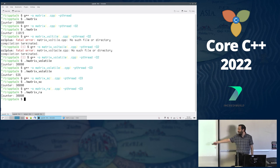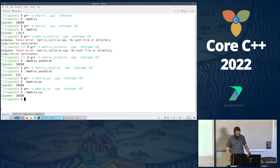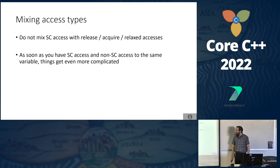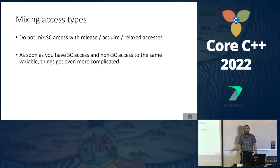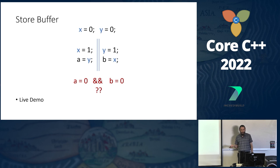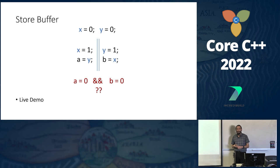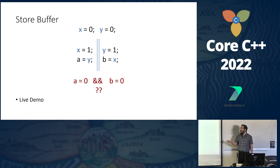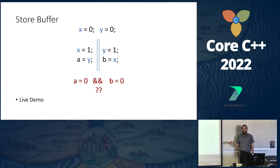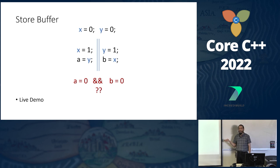But we're now allowing new kinds of behavior. Considering the store buffer example again: if we don't run with sequential consistency, can we actually get zero for both a and b? Under sequential consistency that's not possible, but under release-acquire or relaxed it's a very valid result that we can actually observe on real hardware.